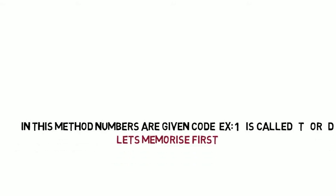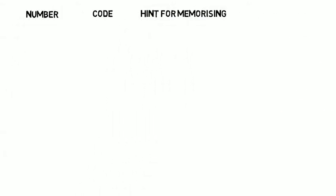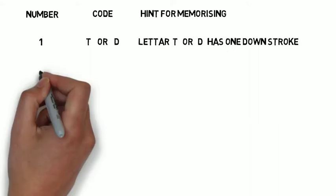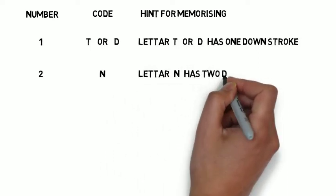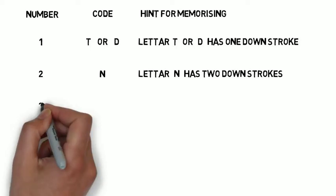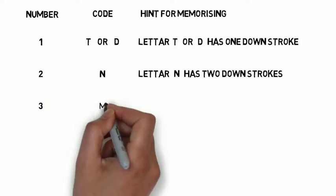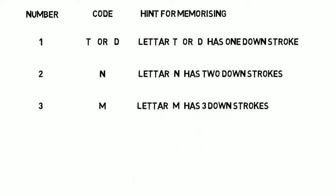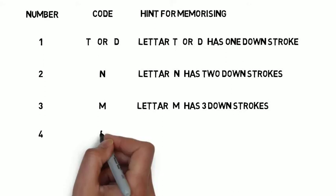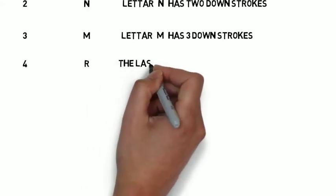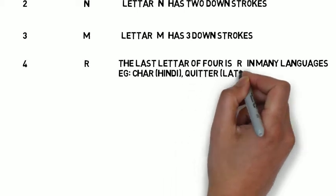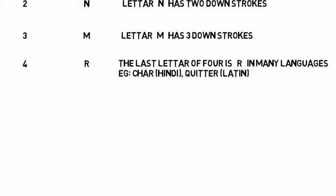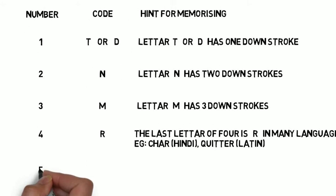Code 1 is T or D — hint: the letter T or D has one down stroke. Code 2 is N — the letter N has two down strokes. Code 3 is M — the letter M has three down strokes. Code 4 is R — the last letter of 'four' is R in many languages; for example, in Hindi 'char', in Latin 'quitter' — everywhere the last letter is R.